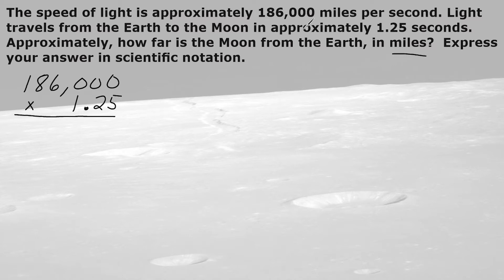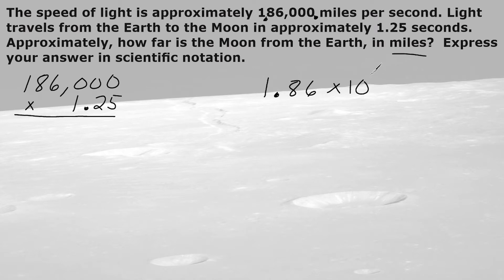To write 186,000 miles in scientific notation, we would write 1.86 times 10 to the — our decimal would have started at the end of this value and we move it between the one and the eight, so we would have jumped over five place values, so that would be 10 to the fifth power. And we would multiply this by 1.25. All you do is multiply the coefficient by 1.25 and leave this as 10 to the fifth power.